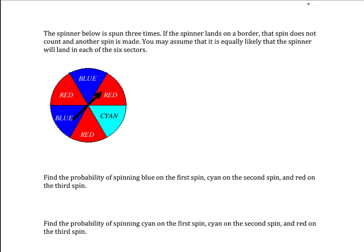The spinner below is spun three times. If the spinner lands on a border, that spin does not count and another spin is made. You may assume that it's equally likely that the spinner will land in each of the six sectors.